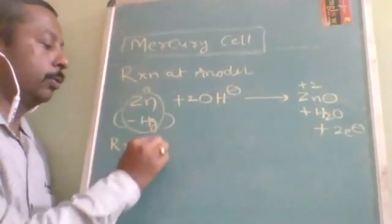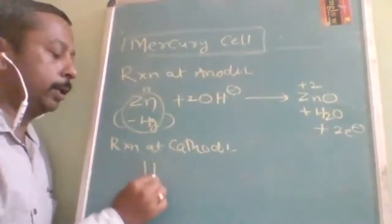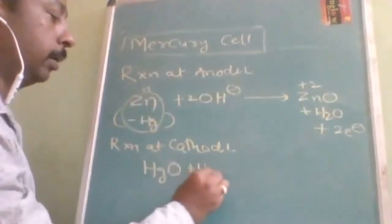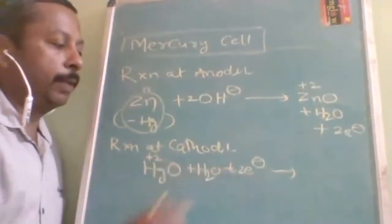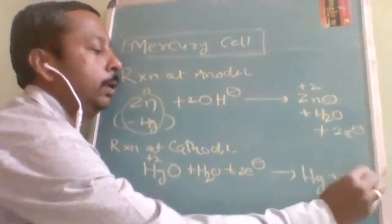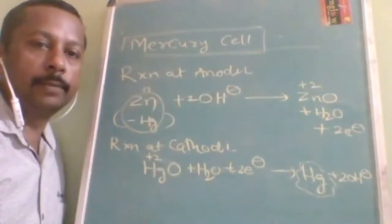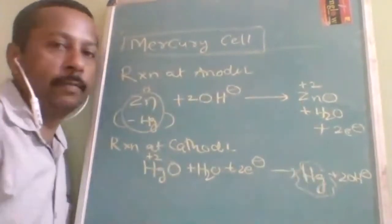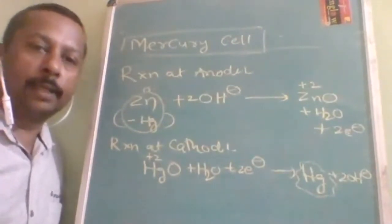At the cathode, reduction takes place. HgO accepts the two electrons in the presence of water and is reduced: HgO + H2O + 2e⁻ → Hg + 2OH⁻. Before the reaction, mercury's oxidation number is +2; after reduction it becomes 0. One disadvantage is that mercury is a poison, making disposal of the mercury cell a main drawback.